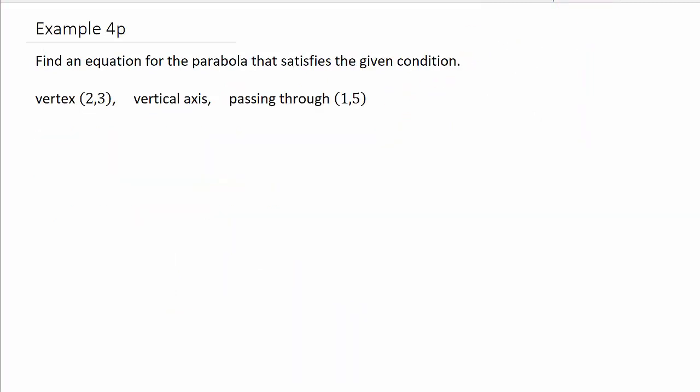So let's look at this example. It says find an equation for the parabola that has vertex 2, 3, has a vertical axis, and it passes through the point 1, 5. All right, so let's see what we've got. Let's make a sketch because we don't really know which way it opens, if it opens up or down. I mean, you can probably figure it out, but we'll draw it and that'll make it easier.